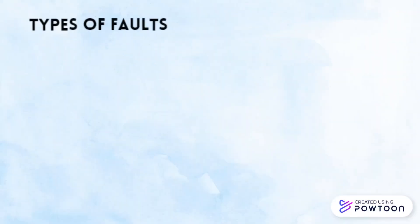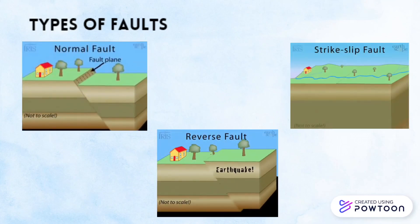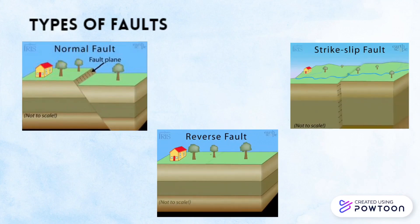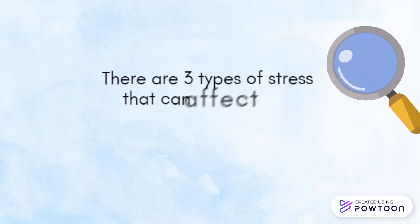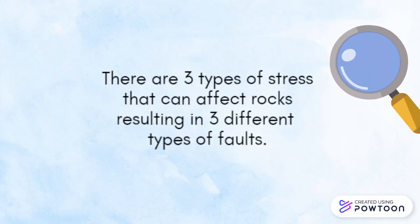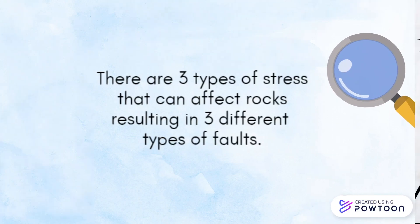There are three types of faults: normal fault, reverse fault, and strike-slip fault. There are three types of stress that can affect rocks, resulting in these three different types of faults.